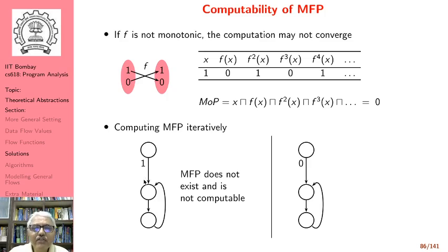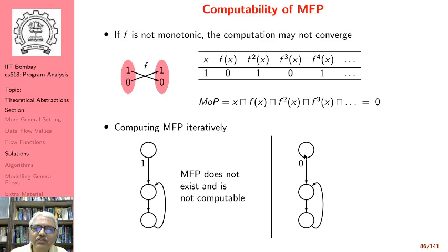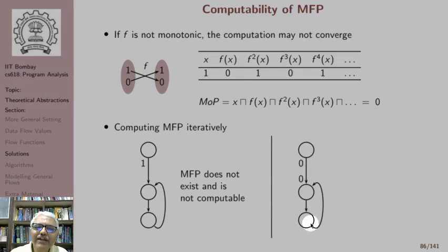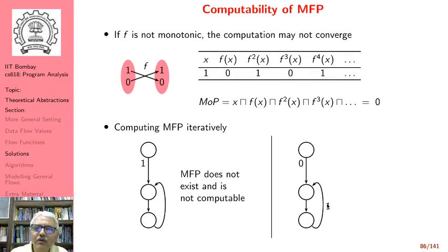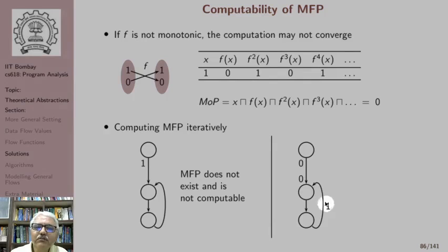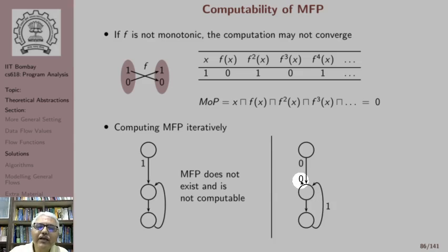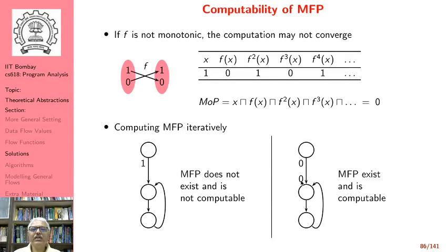However, even with a non-monotonic function, MFP could exist if the initial value is 0. When we have 0 here, we get 0 here. F(0) gives 1, but that 1 merged with 0 gives 0, so the value remains 0. Subsequent iterations give 1 from F but the merge stays 0 — values stabilize. So in this case MFP exists and is computable.